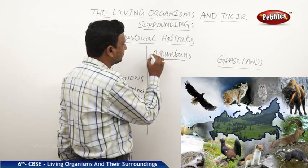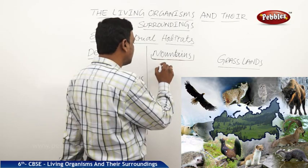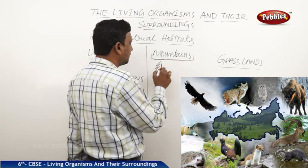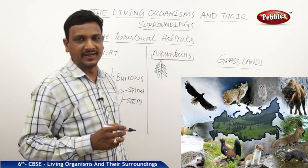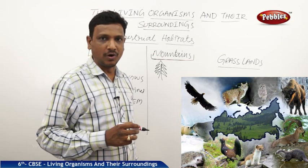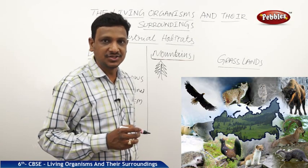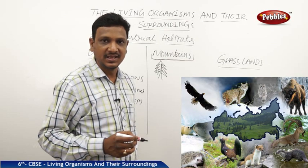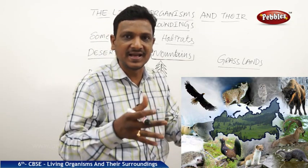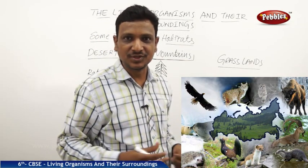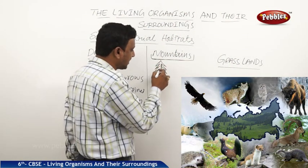Now let us see the mountains. In the case of mountains, we see the plants and trees that are specially shaped. They have a shape of a particular kind. When there is heavy rainfall and snowfall, the snow should not stay on the branches of the tree, otherwise they cannot breathe and they die. So the snow that falls on the trees should easily slide off. When the tree has a slope, that is the reason they have slopey branches.